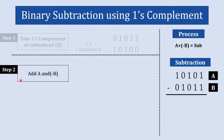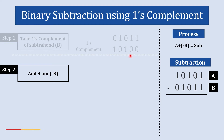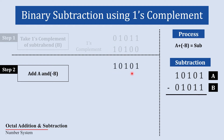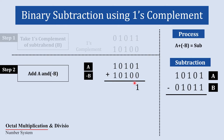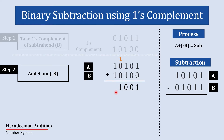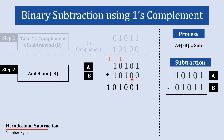In step number two, we add both a and the one's complement of b. We write a, then the one's complement of b, and perform the addition: 1 plus 0 is 1; 0 plus 0 is 0; 1 plus 1 is 0 with carry 1; 1 plus 0 plus 0 is 1; 1 plus 1 is 0 with carry 1. This carry is written at the front, giving us the result of this addition.